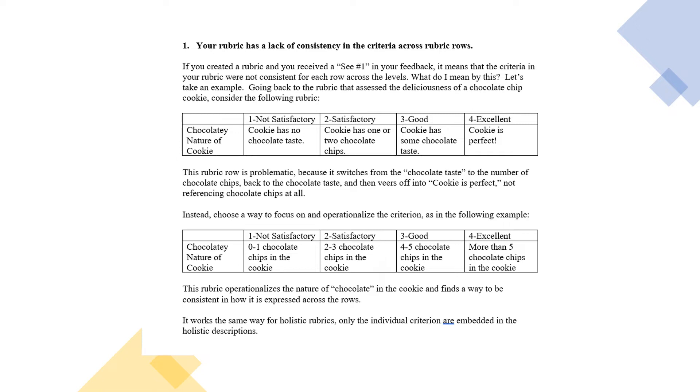Let's look at the levels. One is not satisfactory: Cookie has no chocolate taste. Two is satisfactory: Cookie has one or two chocolate chips. Do you see how we switched from no chocolate taste to one or two chocolate chips? Those are different measures.